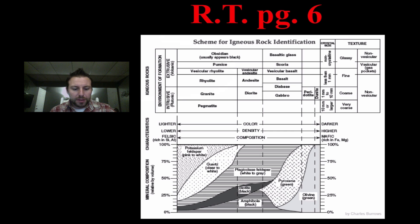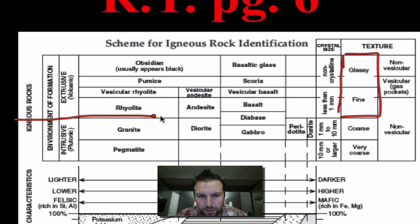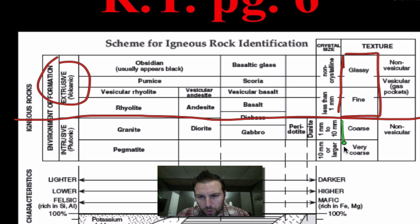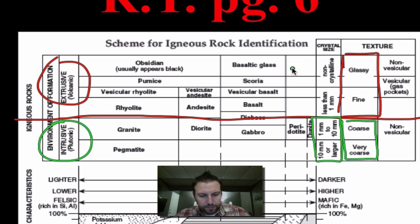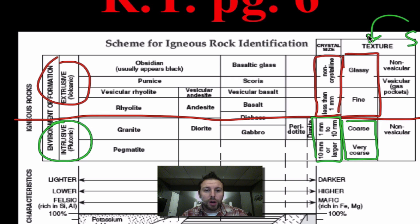On page six of the reference table, we look at textures on the right side. A glassy or fine texture — we can draw a line across — will be extrusive. Coarse and very coarse textures, equating to large crystal size, will be intrusive. Remember, texture here refers to crystal size, not how it feels. Glassy and fine means non-crystalline or very small crystals, which is extrusive; coarse and very coarse means large crystals, which is intrusive.